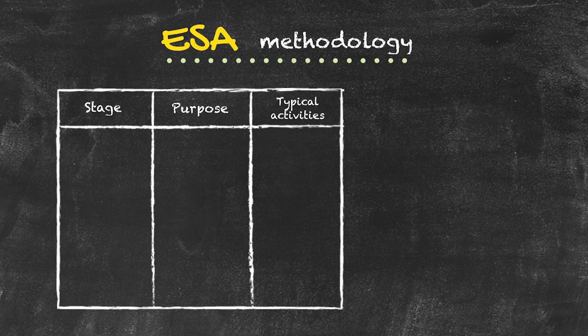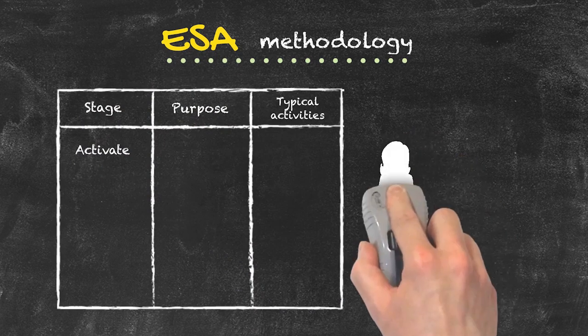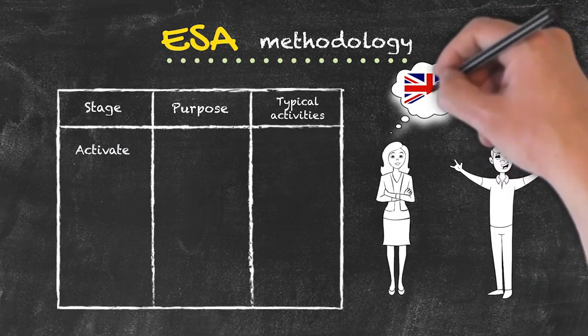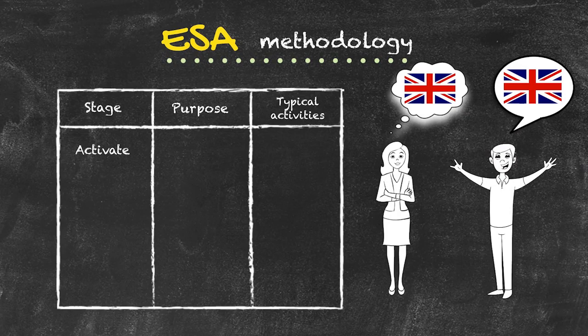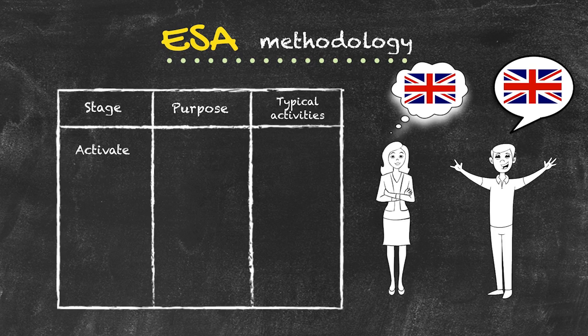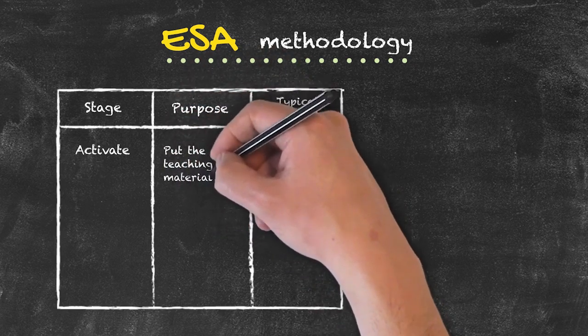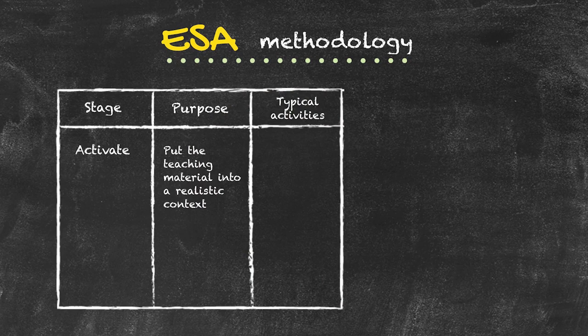On to the final phase of the ESA lesson: the activate phase. What we have done so far is engage the students to get them talking and thinking in English, elicited the teaching point and covered any gaps in knowledge, and then checked understanding through targeted and specific questions. Typically, the study phase activities involve using a single word to answer questions correctly. However, this is not how language is actually used — when we use language, we always use it in some form of context. So the purpose of the activate activity is to put that teaching material into some form of realistic context that students would actually use.